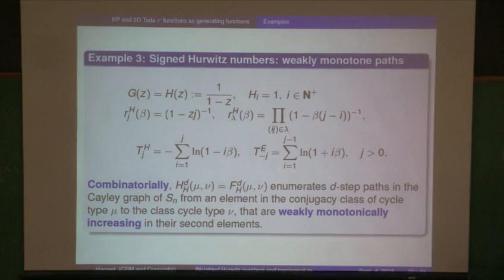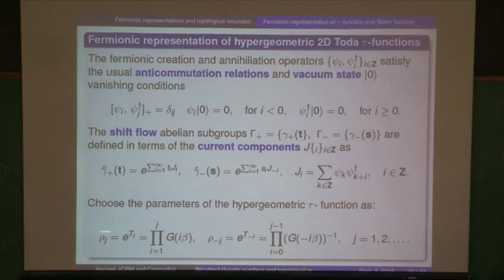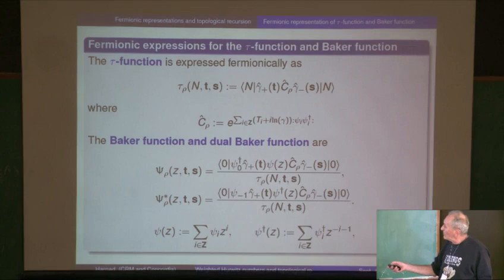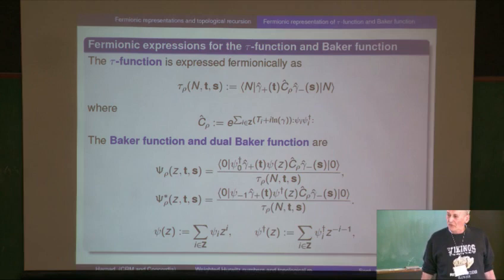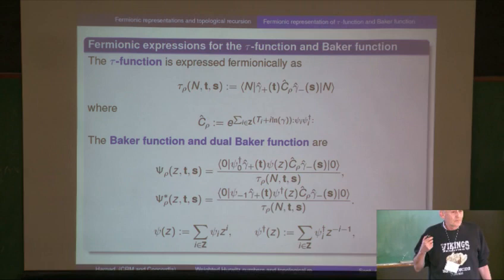The group element in the middle is of this form: notice psi_i psi_i^dagger in normal order — so it's diagonal, it acts diagonally. Any tau function of that diagonal form was called, many years ago — I'm not sure who first used the expression — a tau function of hypergeometric type. I think Sasha Orlov first called it that, but it did appear in earlier works of Orlov and Mironov as well.